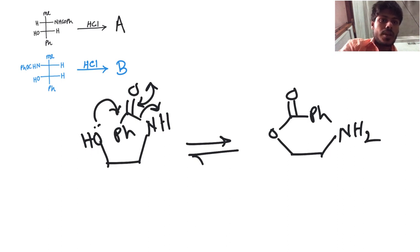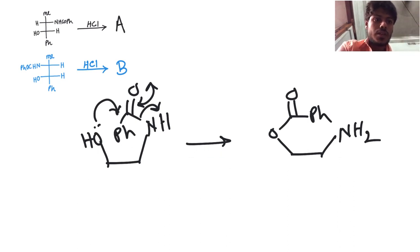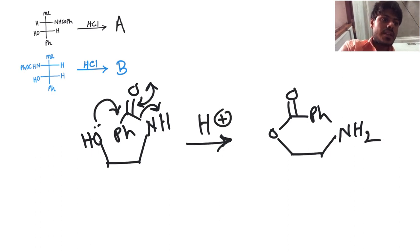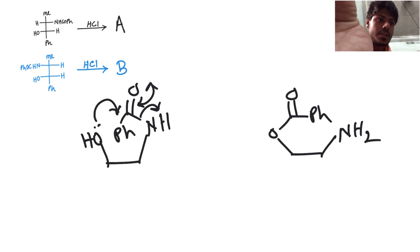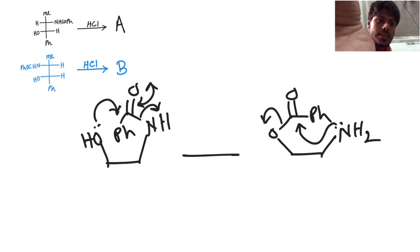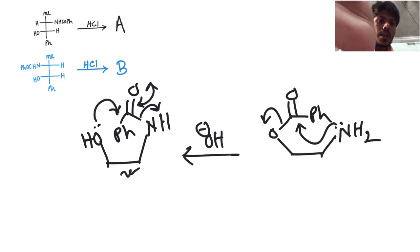When you use acid or base, you can push this reaction to one side. When you use acid, the reaction becomes irreversible and goes to one side, forming NH3+. But if you use base, the NH2 attacks and you get the product on the left-hand side.